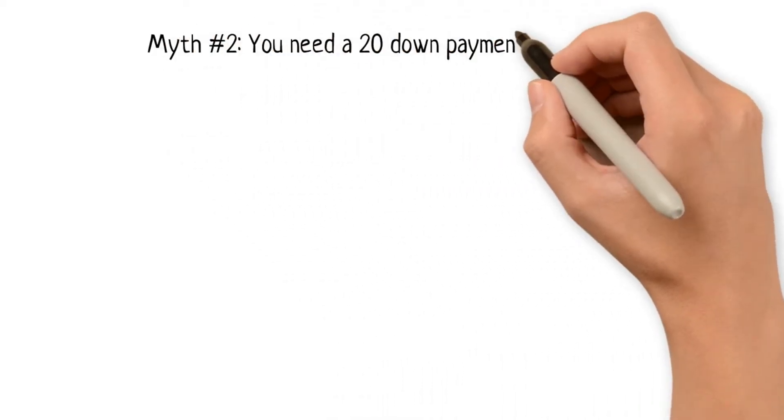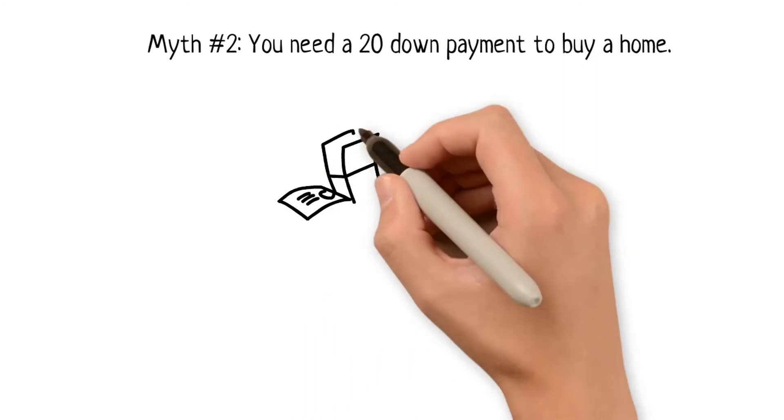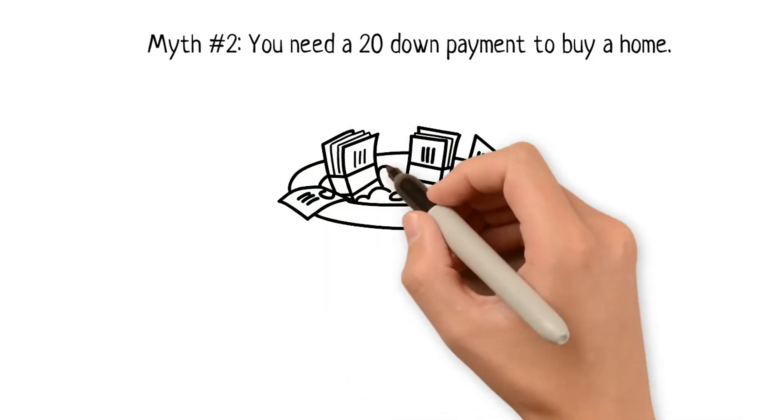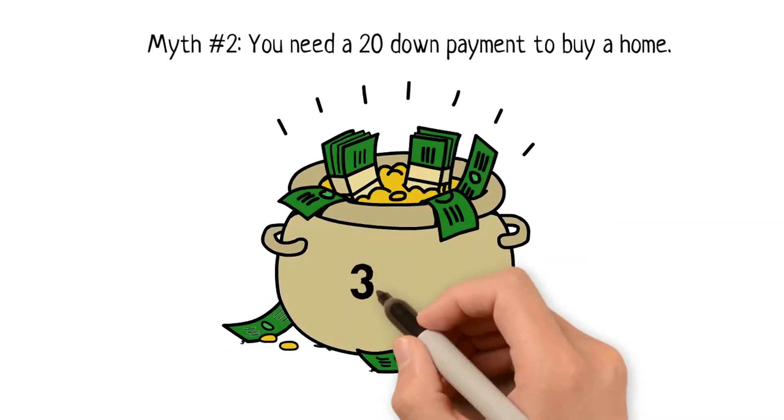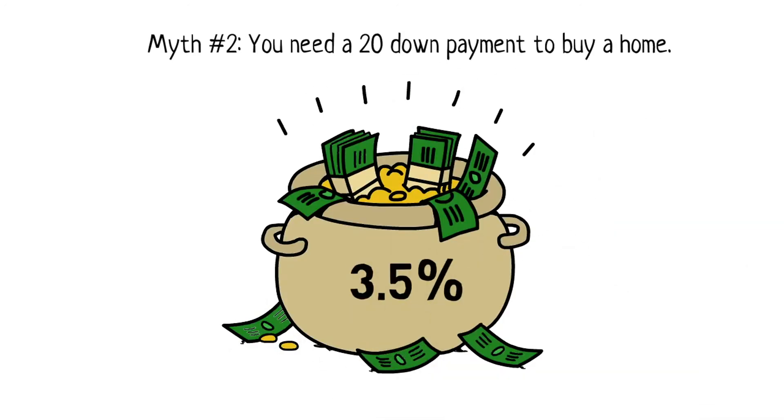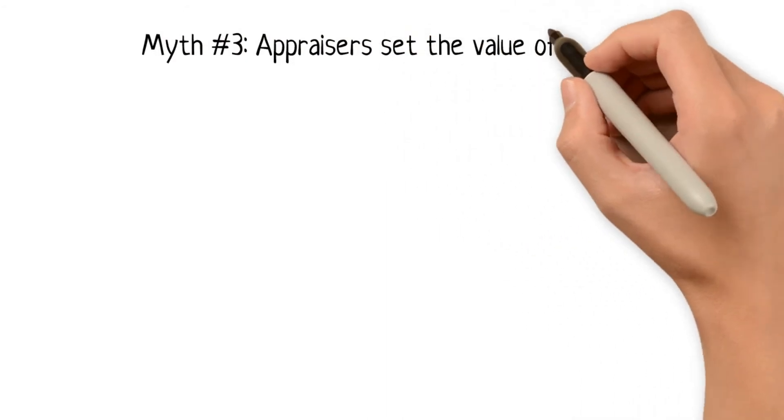Myth #2: You need a 20% down payment to buy a home. Not true. Many financing programs are available, and some require down payments of as little as 3.5%. Myth #3: Appraisers set the value of a home.